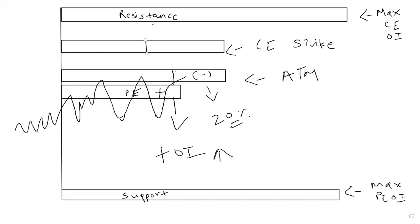If at the same time we see the at-the-money put option where open interest is increasing — addition happening to put OI — that tells us the support is getting stronger and stronger. And if on another call strike the open interest has shed, say 10%, that again tells you something positive might come in because there are a lot of short coverings happening on the call option. They may be expecting a spike to happen in the instrument.